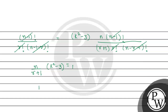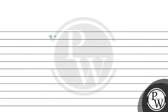From here, k squared minus 3 equals (r+1)/n. We know that (r+1)/n is greater than 0 but less than or equal to 1. That means k squared minus 3 is less than or equal to 1 but greater than 0. So k squared is less than or equal to 4 but greater than 3.